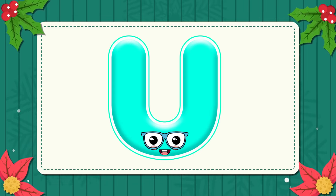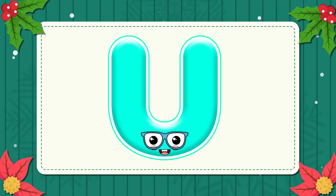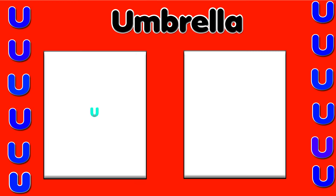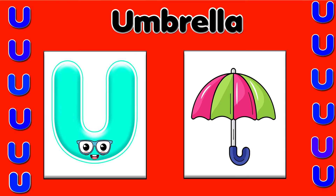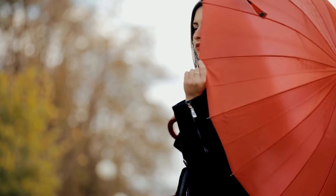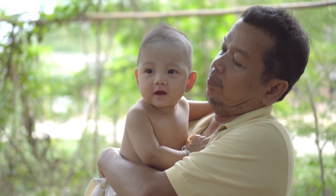U. This is the letter U. U is for umbrella — u, umbrella. U is for uncle — u, u, u.